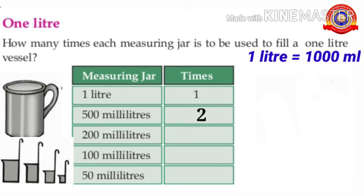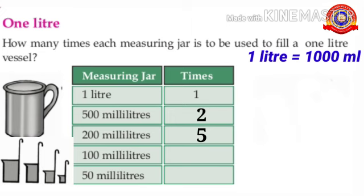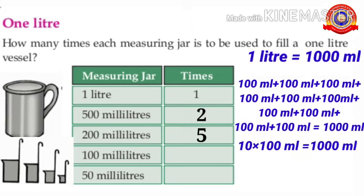How many times do you use a 200 ml jar to fill a 1 liter vessel? How many 200 ml make 1000 ml? When a 200 ml jar is used 5 times, the 1 liter vessel fills up. How many times do you use a 100 ml jar to fill a 1 liter vessel? How many times does 100 ml make 1000 ml? Yes, 10 times 100 ml make 1000 ml. So when a 100 ml jar is used 10 times, the 1 liter vessel fills up.